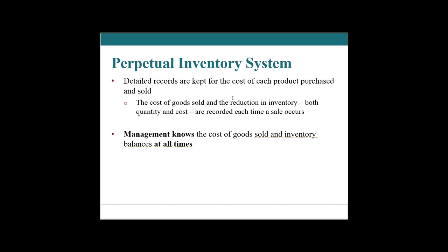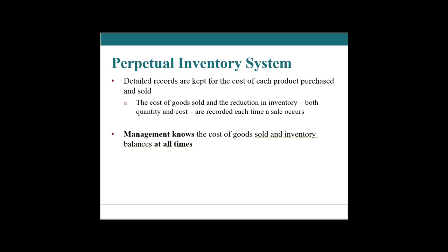Under the perpetual inventory system, detailed records are kept for the cost of each product purchased and sold. Cost of goods sold is the reduction in inventory, and management knows the cost of goods sold and inventory balances at all times. A physical count is done at least once a year to adjust perpetual records to actual, to account for items like shrinkage. While this system enables effective control of inventory, it takes time.